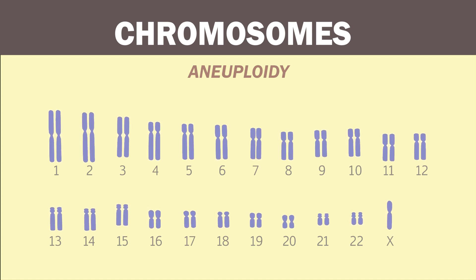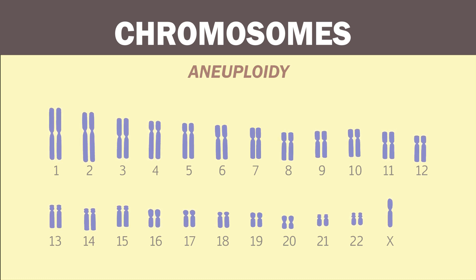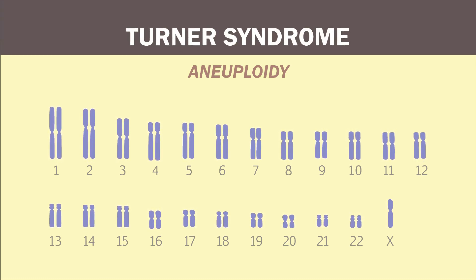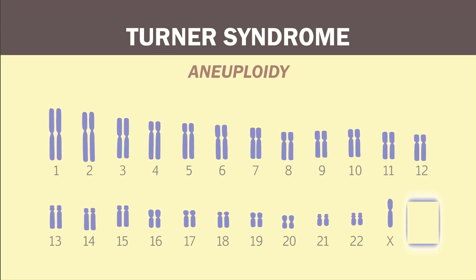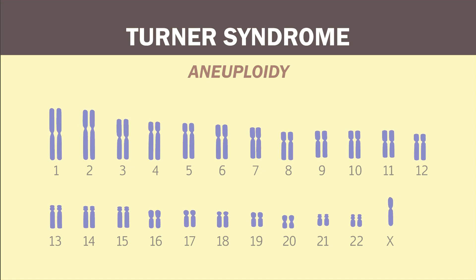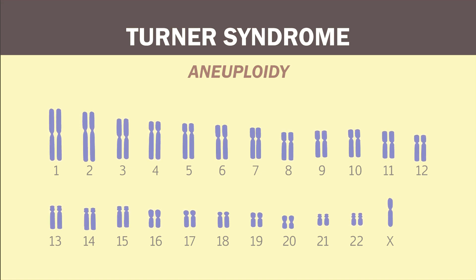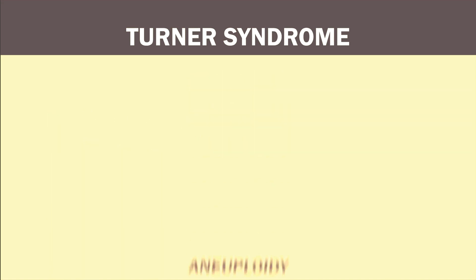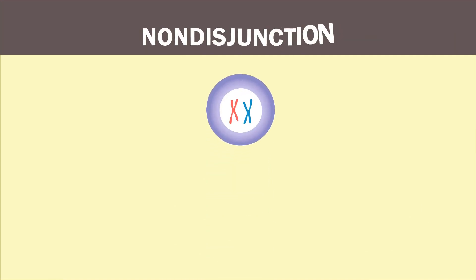The most common chromosome abnormality found in spontaneous abortions or loss of pregnancy is called Turner syndrome. This is a sex chromosome aneuploidy with a loss of one of the sex chromosomes. It is also the most common sex chromosome aneuploidy found in live births, and it occurs as a result of non-disjunction.